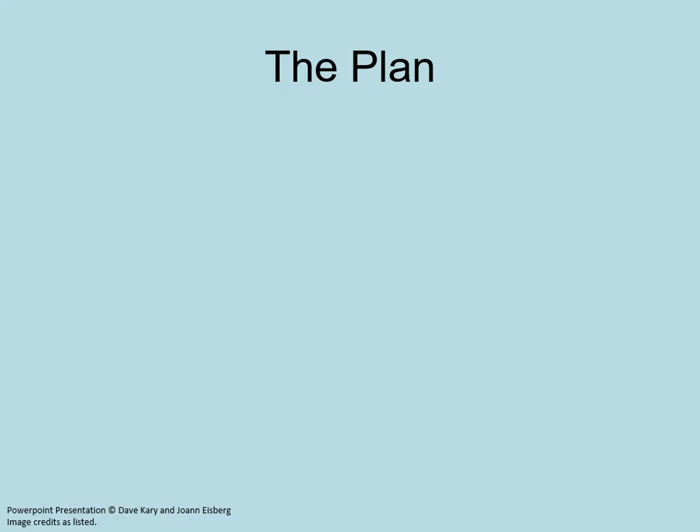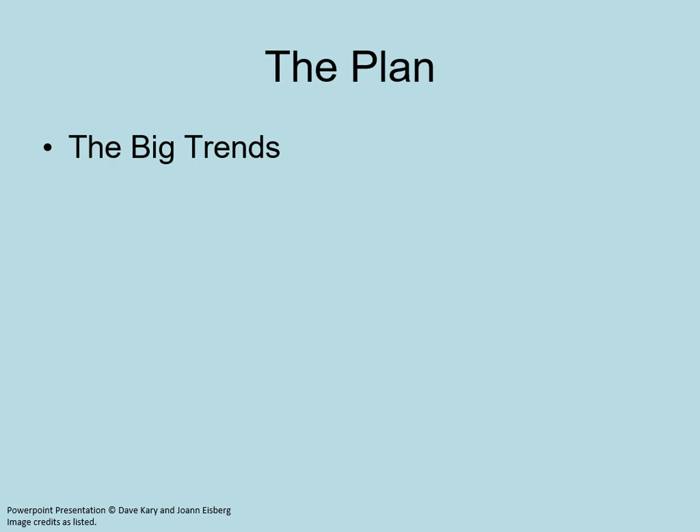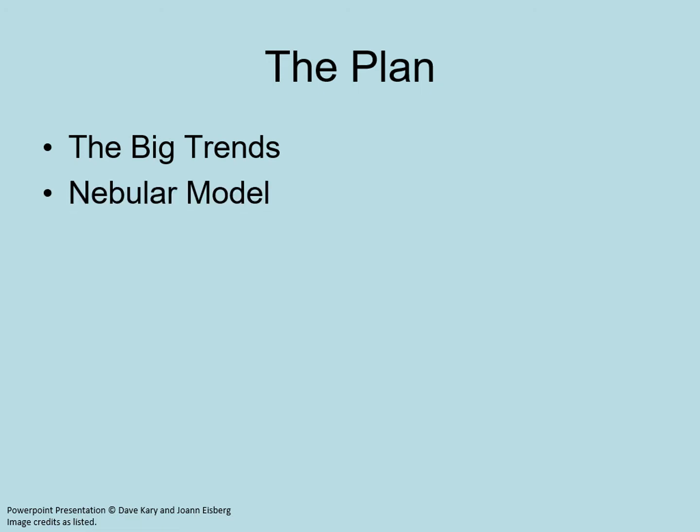In this chapter, we'll start by reviewing the big trends observed in our own solar system and add a few more to the list. Then we'll discuss the current best model of how planets form. We'll have a look at the observations of solar systems forming today and tie them in to the steps in the model.